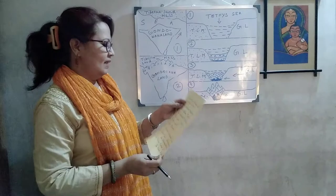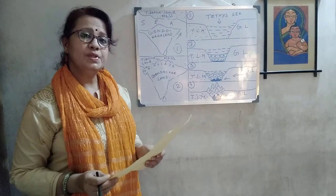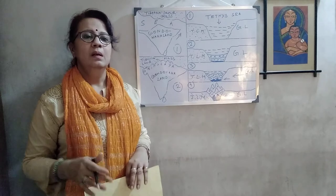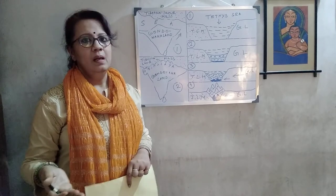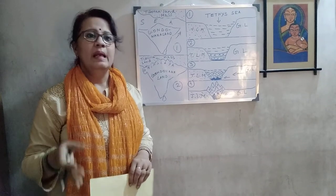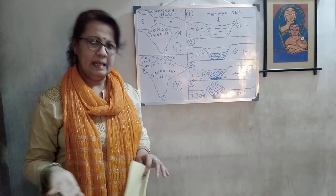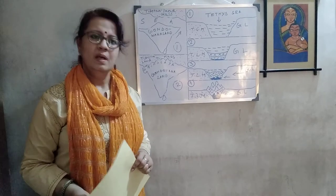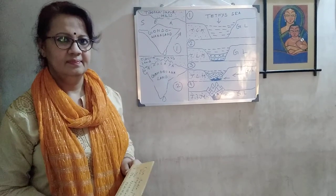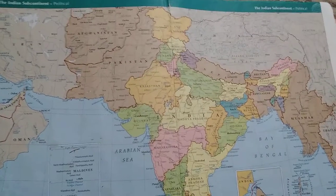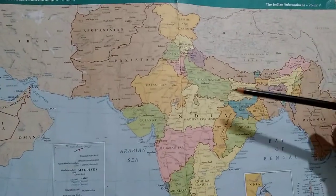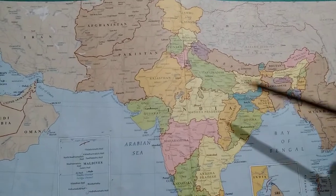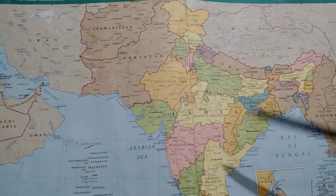Today we will learn about the coastal plains, the Thar desert, and the islands. We will go back to the atlas - we all have to consult the atlas and read the remaining parts of the physiographic divisions. So let's start. This is India, we already learned about the location, the states, etc. Today we will learn about the coastal plains.